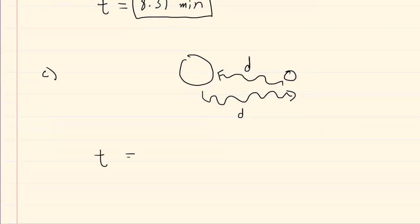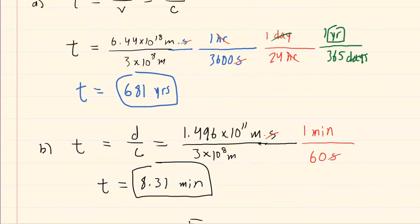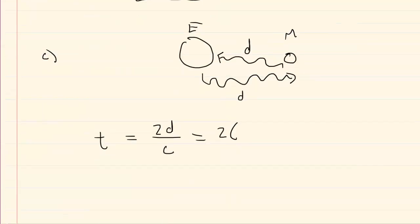The time would still be the distance, but we're going to do 2D divided by the speed of light. We'll look up the distance between the Earth and the Moon in our textbook. There's an appendix located in the back of the book. It happens to be 3.84 × 10^8 meters, divided by the speed of light, 3 × 10^8 meters per second.